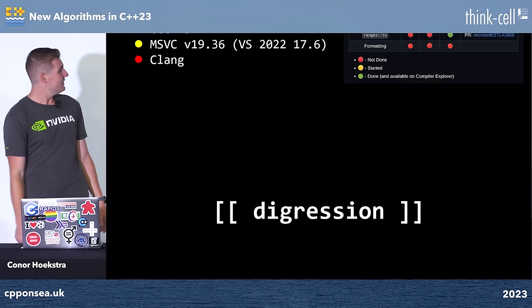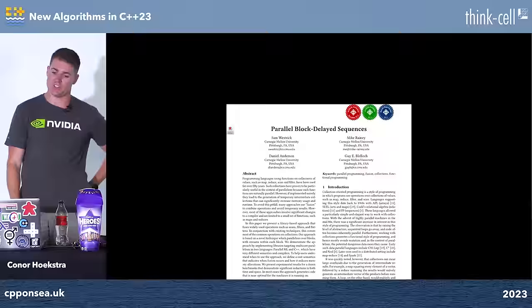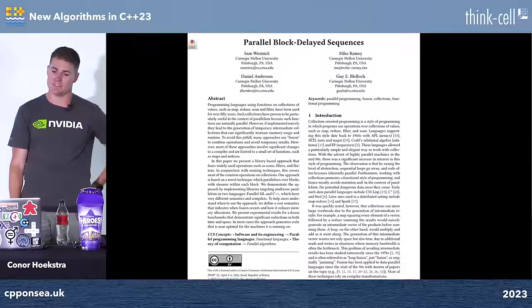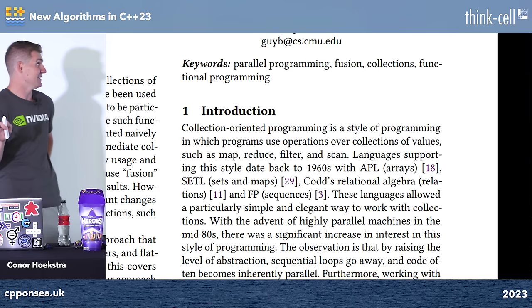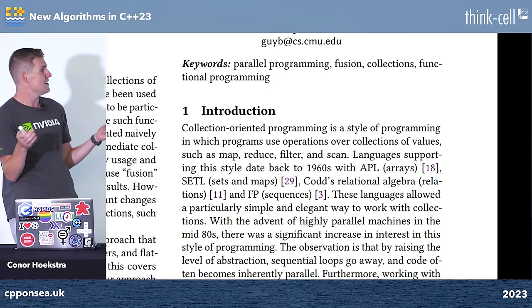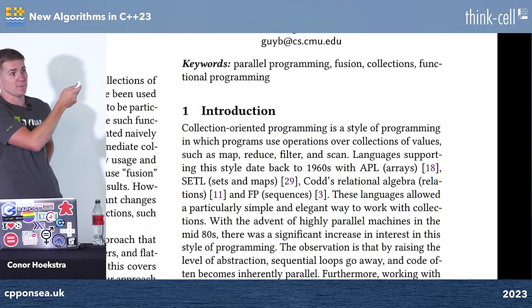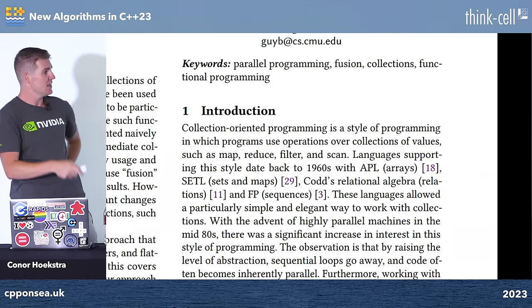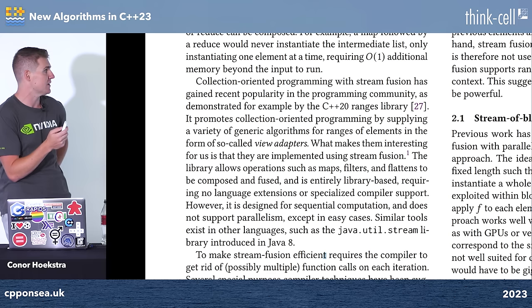Small digression: my boss put a paper called 'Parallel Block Delayed Sequences' on my radar, and it's become my favorite paper of the last year. Its introduction defines 'collection-oriented programming' as a style using operations over collections — map, reduce, filter, scan — and traces this back to APL in the 1960s and John Backus's 1979 paper 'Can Programming Be Liberated from the Von Neumann Style.' It also notes that this style has gained recent popularity as demonstrated by C++20's Ranges library.